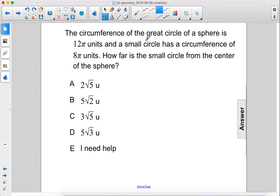The circumference of the great circle of the sphere is 12π units, and a small circle has a circumference of 8π units. How far is the small circle from the center of the sphere?